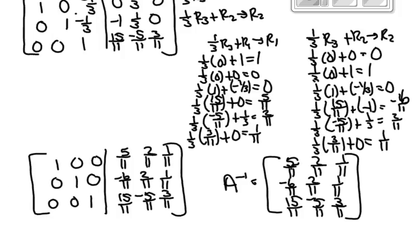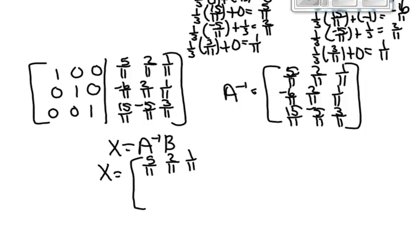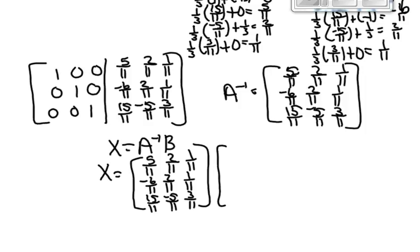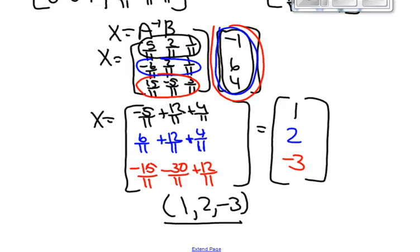The last part is to compute X equal to A inverse times B. You now know what A inverse is, and you know what B is. Doing the multiplication, we get our result. Our solution to this system is x = 1, y = 2, and z = -3. That's very easy to plug into all three original equations, and they do work.